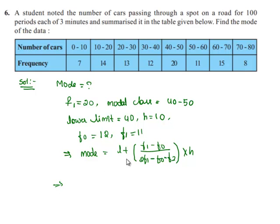Substituting all the values in this formula, we get mode is equal to L that is 40 plus within brackets F1, it is 20 minus 12 by 2 into 20 minus 12 minus 11. So the class size is 10.